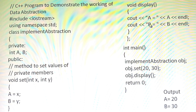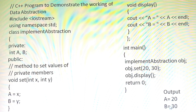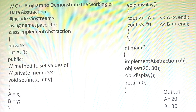Then call the display function. The value of A should print and the value of B should print. After execution of the program, the output is: A is equal to 20, B is equal to 30. Here we know the value of A after executing the program. We got the value of A as 20 and value of B as 30. These are the statements you have to do to get the value for A and B. This is the abstraction.